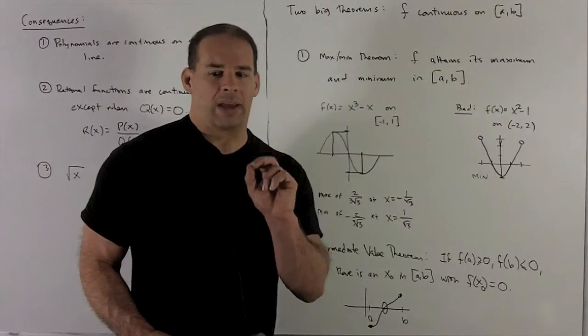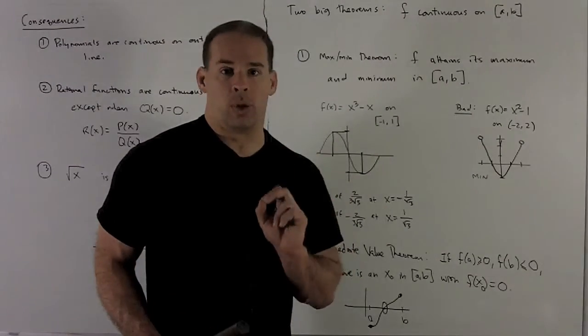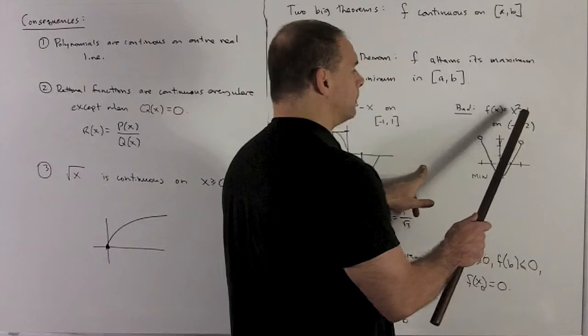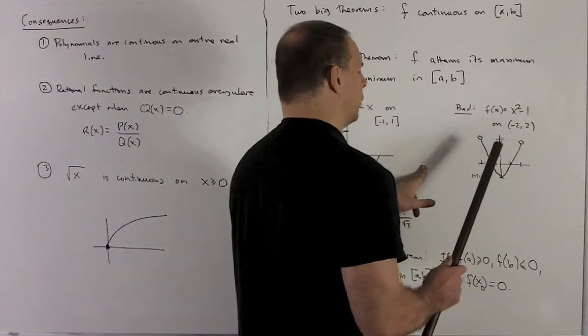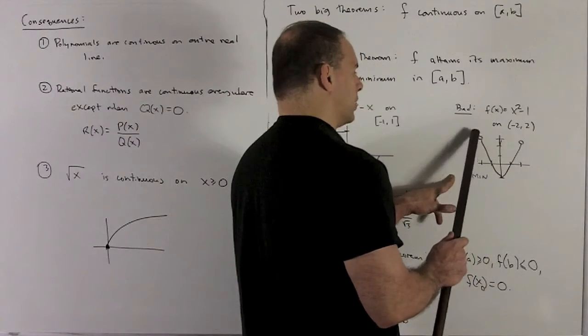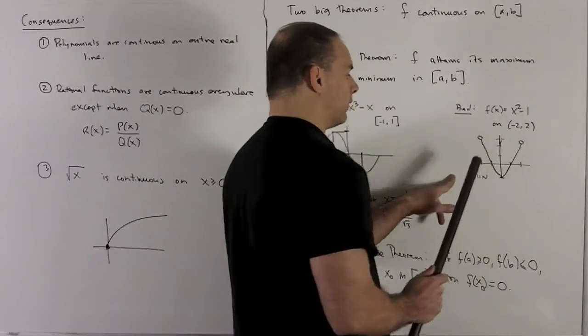Again, subtle. Let's see why it could fail if I let go of the closed interval property. If I take X squared minus 1 on minus 2 to 2, you'll see I draw it in. We're going to be open at these endpoints. The point's not going to be defined there since I have an open interval.